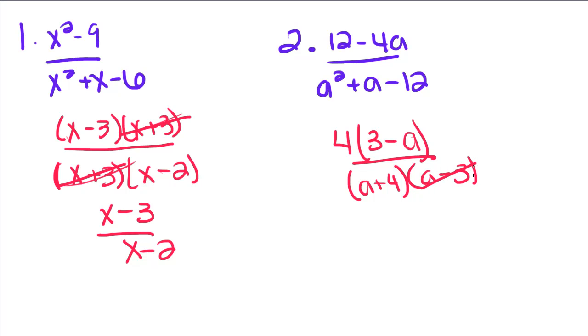This a minus 3, if you look, if you were to rewrite this, this would be a minus 3. So this cancels with this factor, and we're just left with 4 over a plus 4.